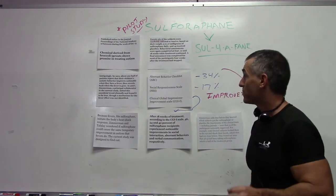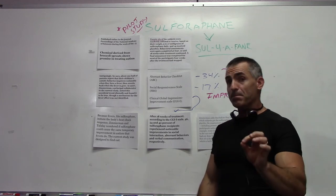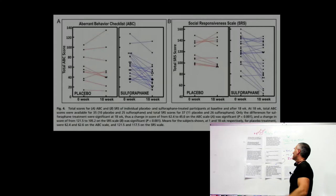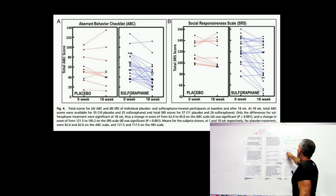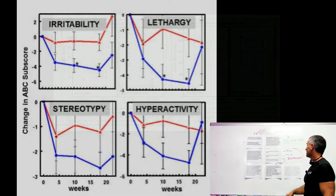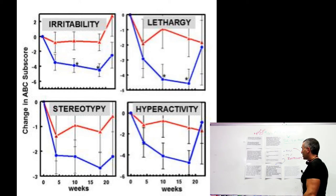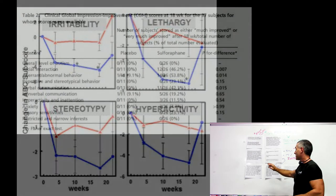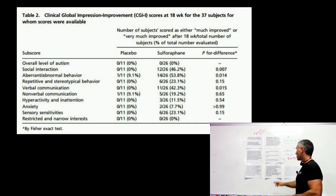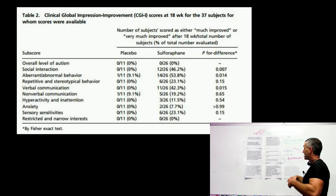In the aberrant behavior checklist, they noticed a 34% improvement. In the social responsiveness scale, a 17% improvement. In the clinical global impressions improvement scale, they noticed 46, 54, 42 percent improvement, which is social interaction, aberrant behaviors, and verbal communication, respectively.